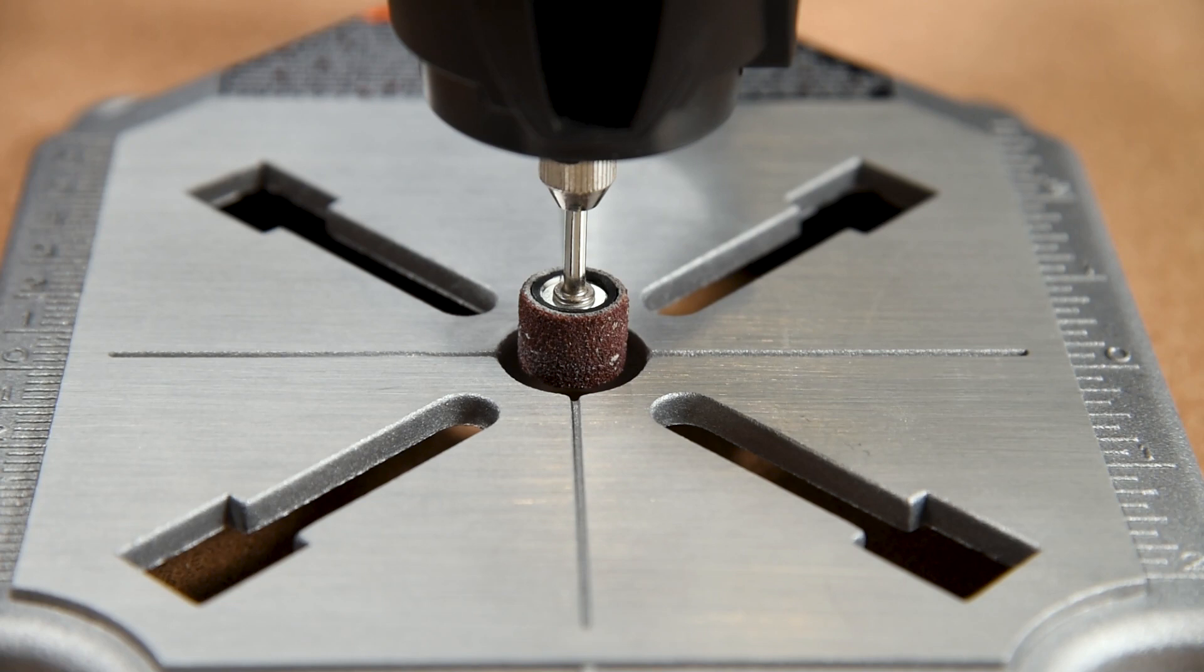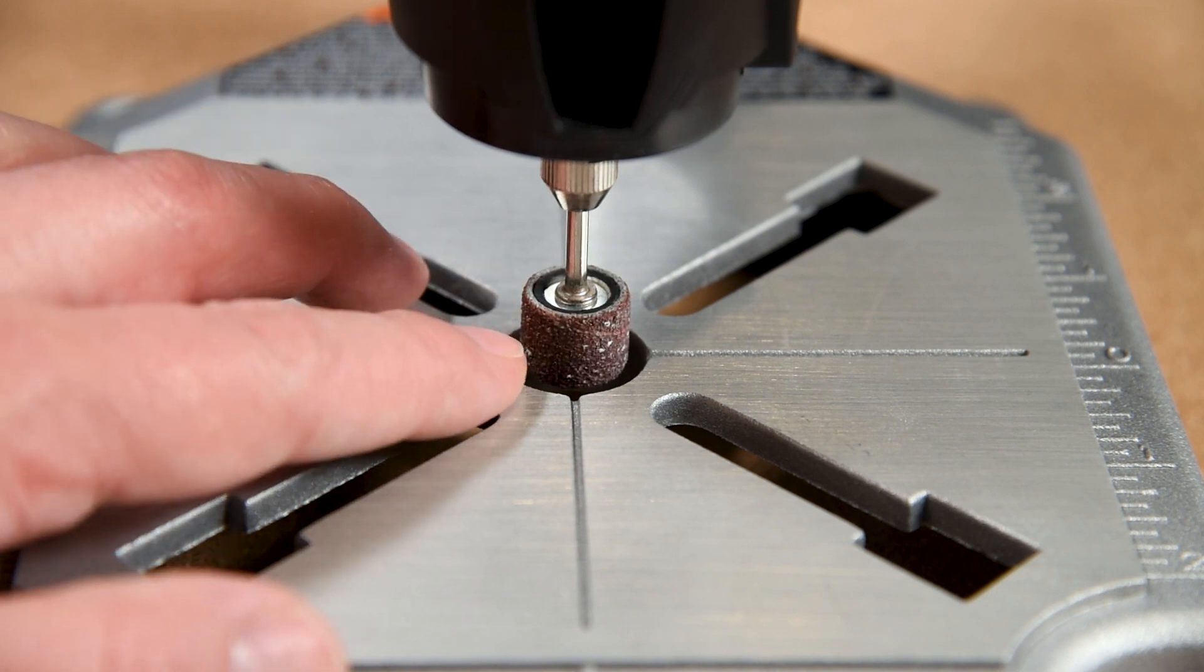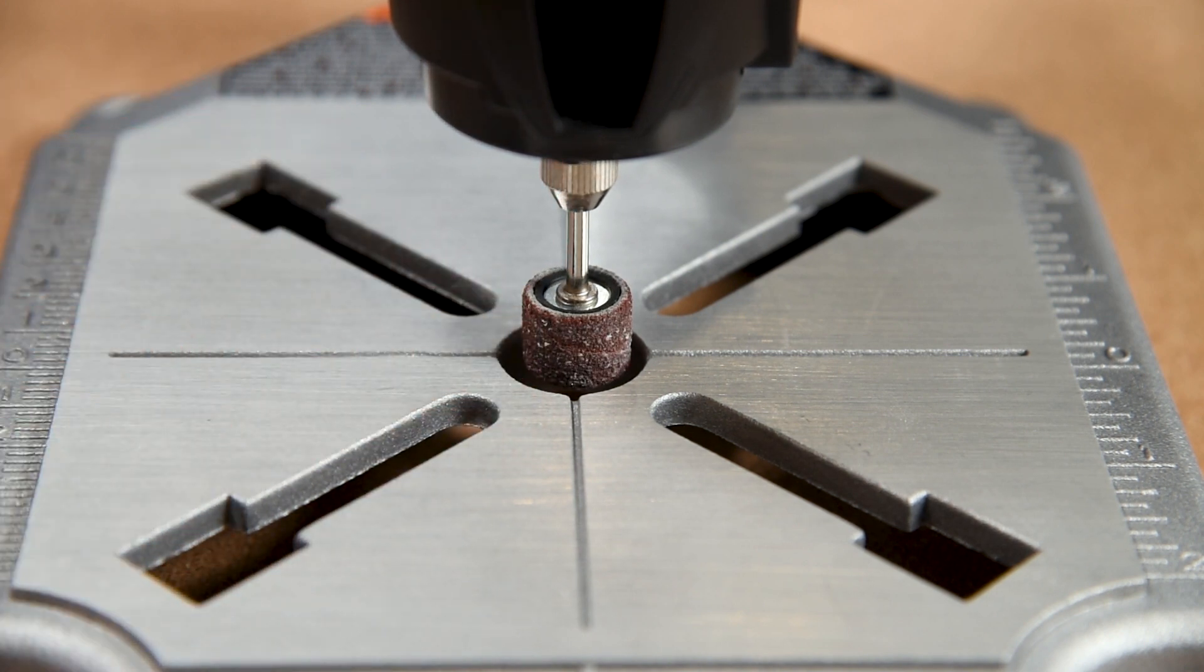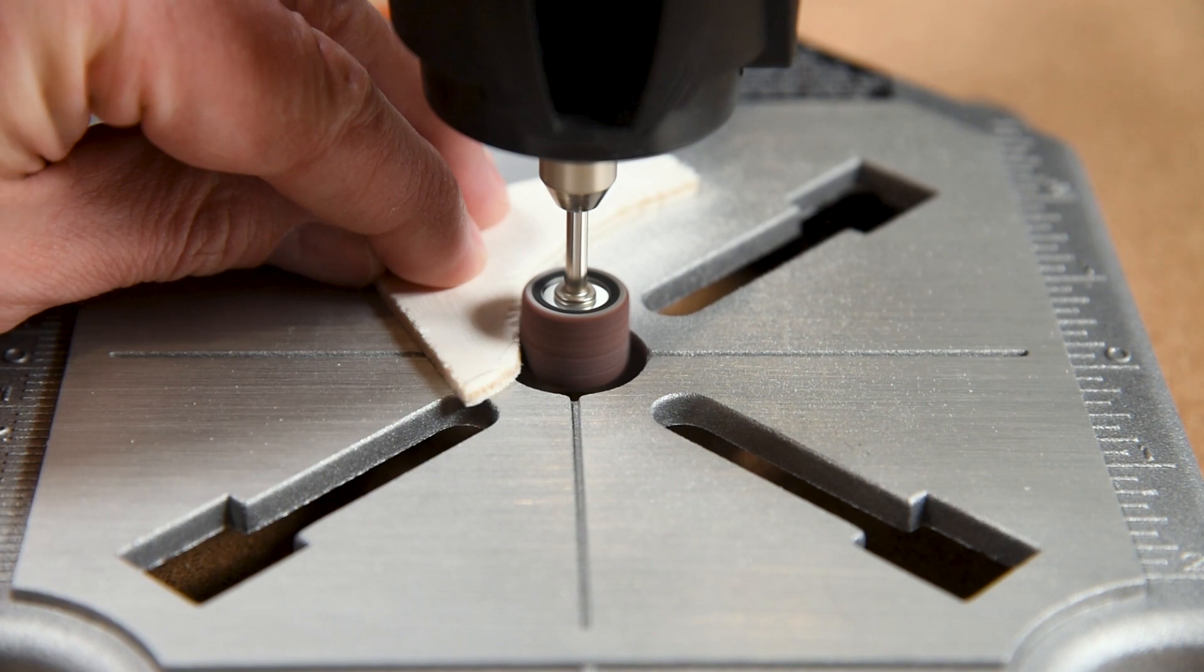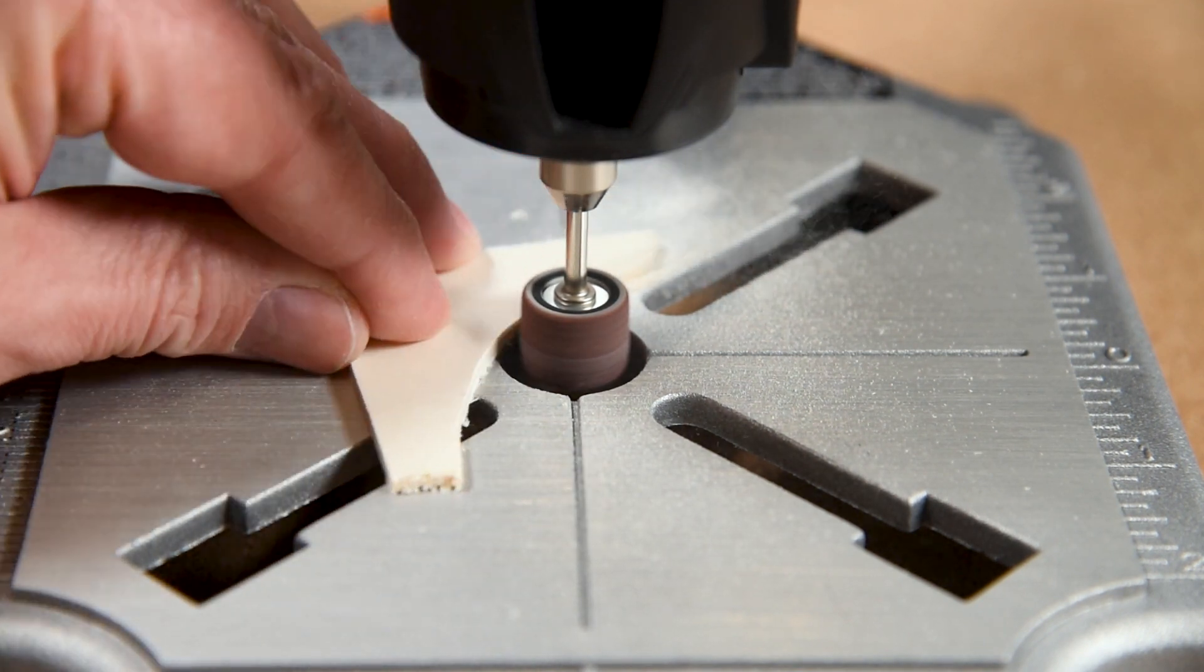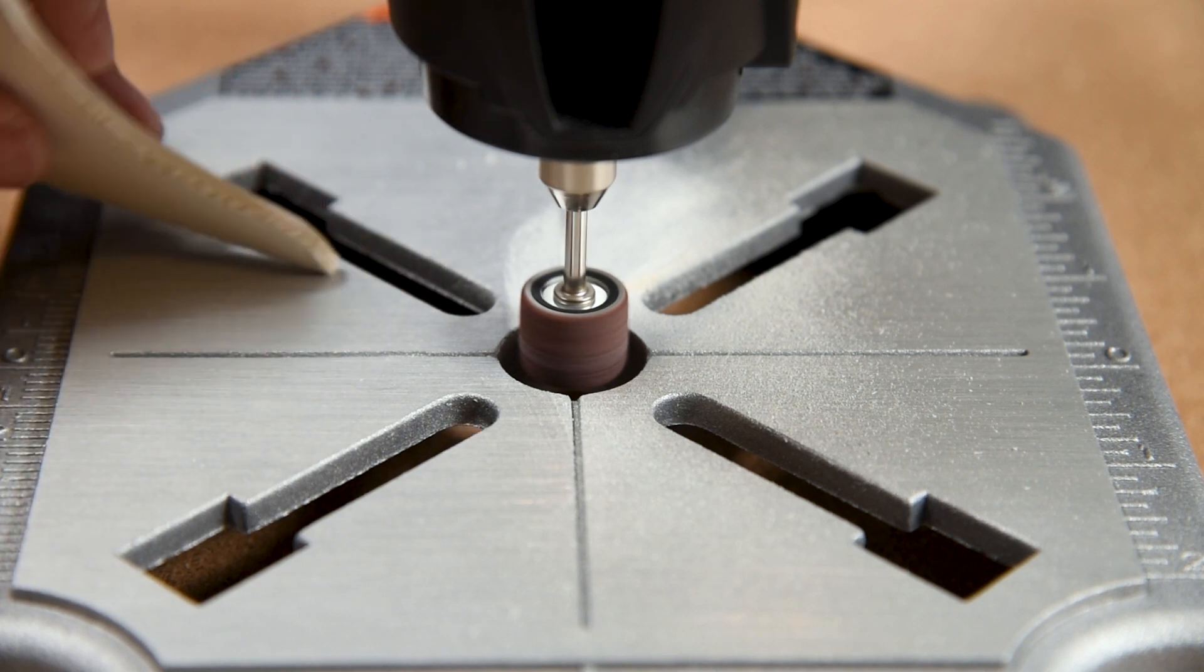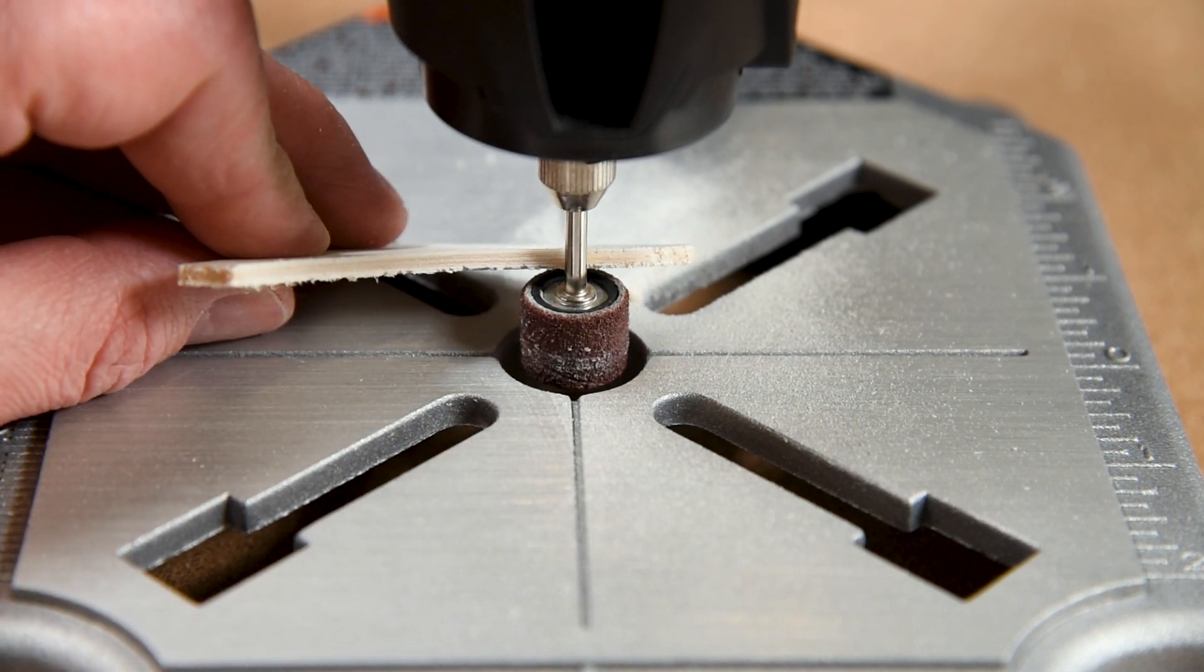Another feature I found neat is that you can switch out your drill bit for a little drum sanding bit, turning the workstation into a little mini drum sander. So let's give that a test and see how well it works. This seems just fine for sanding little pieces but you're obviously not going to be able to use it on anything big.